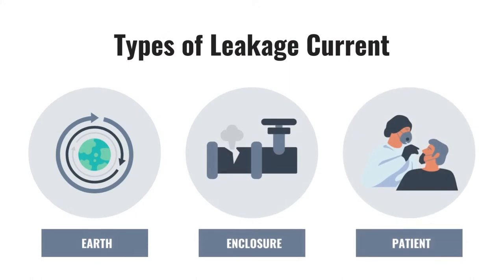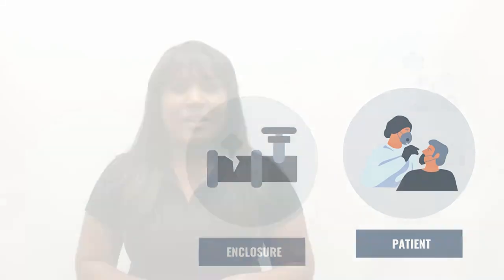Several types of leakage currents have been defined: earth, enclosure, and patient. Patient leakage current flows from the applied part of the medical device through a patient to ground, and can result in waste of energy and be dangerous to human life.